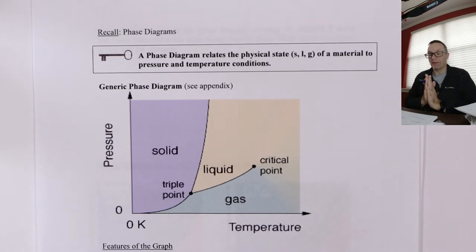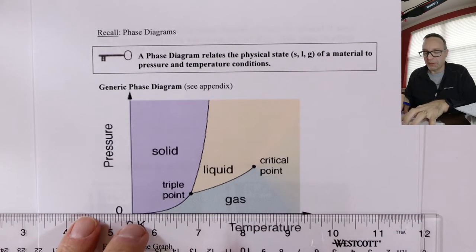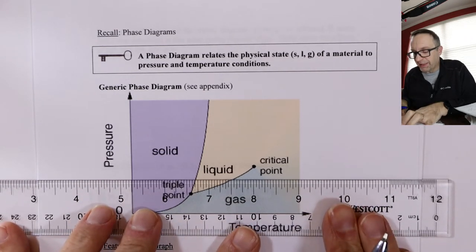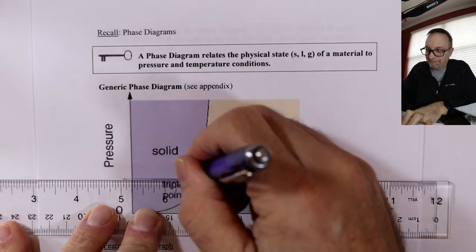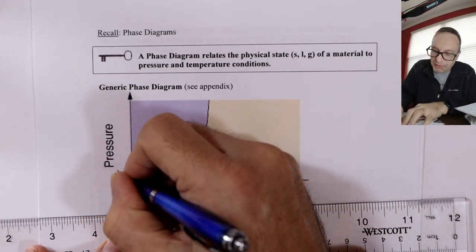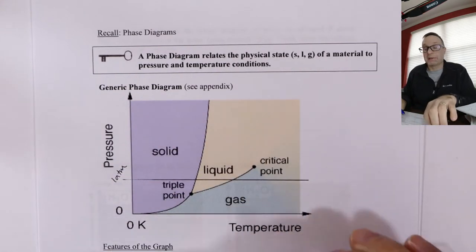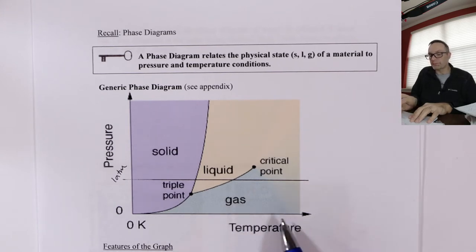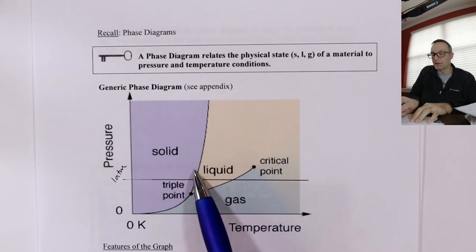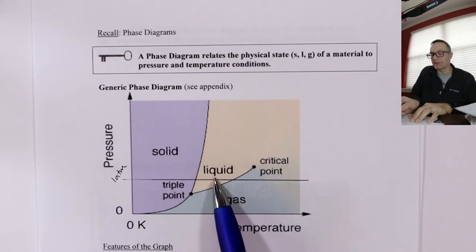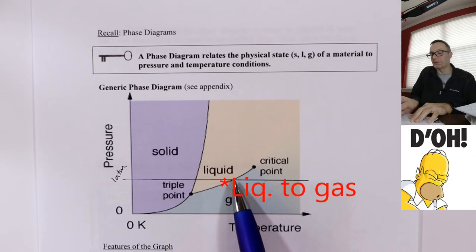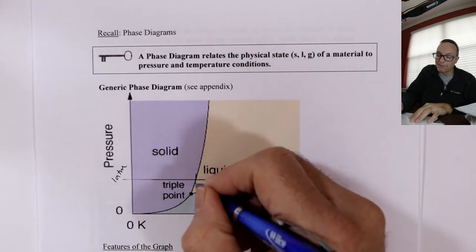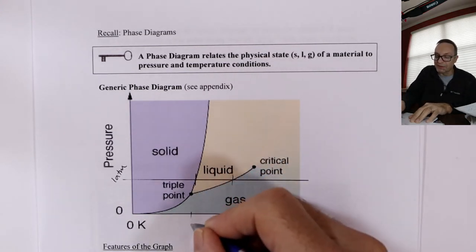Here's a generic phase diagram. I'm going to put a line across here — kind of where we live — at one atmosphere, our atmospheric pressure on planet Earth. The thing that changes outside is the temperature. So as temperature goes up and down at one atmosphere, we move from solid to liquid — that's when it melts — and then from liquid to gas — that's when it boils. For water, those transitions are at 273 K and 373 K. These are the transitions we're familiar with.